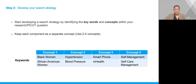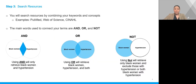Next is developing your search strategy by identifying the keywords and concepts within your research or PICO question. It's a good idea to come up with about two to four concepts. The table here shows an example using the PICO question from the previous slide: keywords would be Black woman, hypertension, smartphone, and self-management. We can also use African-American woman, blood pressure, mHealth, and self-care management as additional keywords for each concept. Now that we've developed our keywords, we can use them to start searching resources.